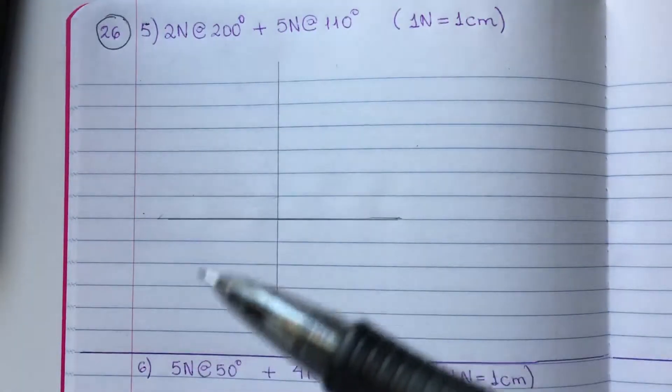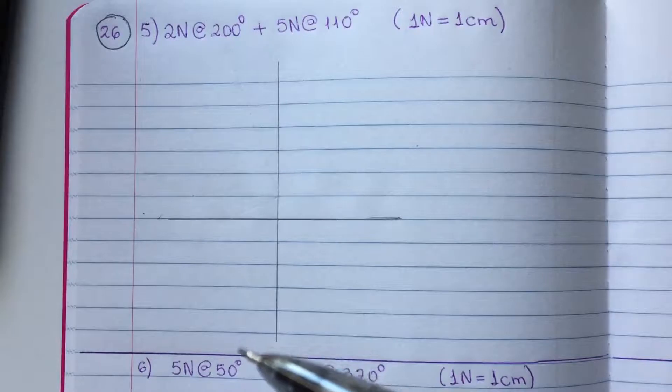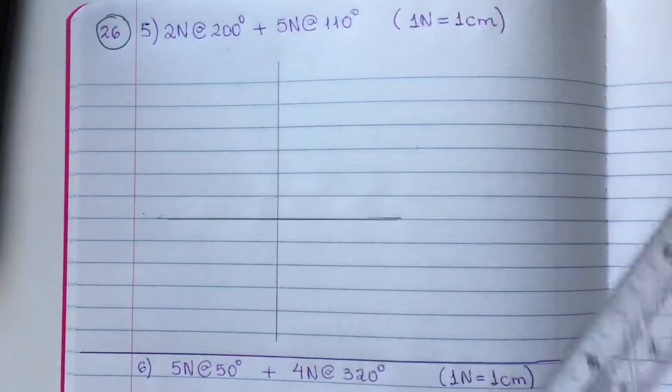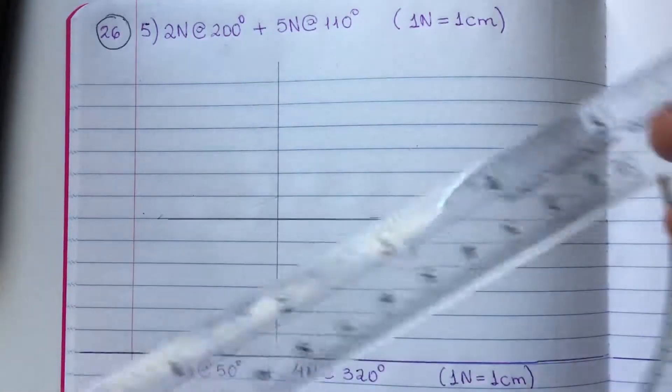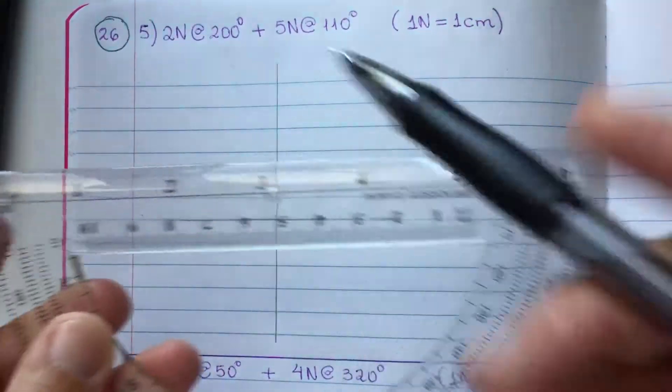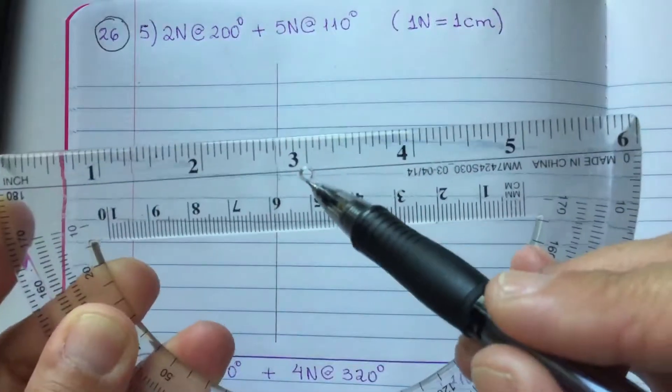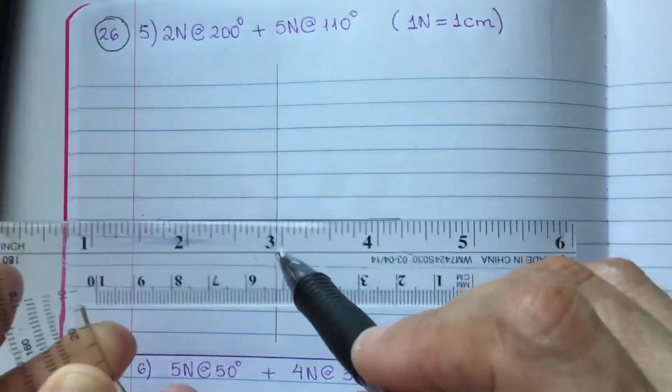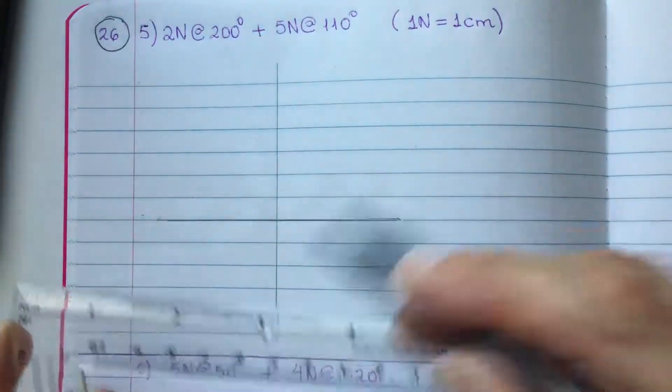200 degrees should be right here between 180 and 270 degrees. To find the exact location, we are going to place the protractor upside down and align this little hole here with the center of this grid.